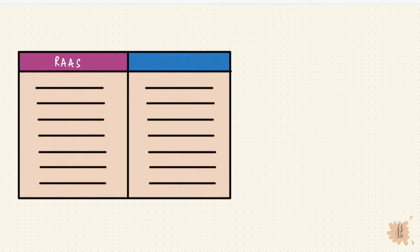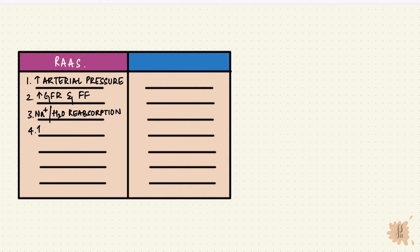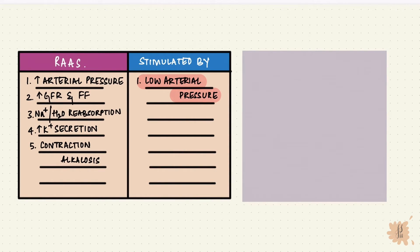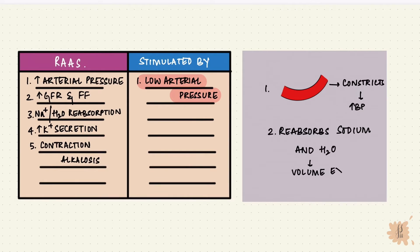So put together, angiotensin-2 increases arterial pressure, increases GFR and filtration fraction, reabsorbs sodium and water, increases potassium secretion, and causes contraction alkalosis. Now let's look at what stimulates its release. First, low arterial pressure — that makes sense: it vasoconstricts to increase blood pressure, and also reabsorbs sodium and water so volume expansion can increase pressure. Vasoconstriction is fast, and volume expansion is slow.